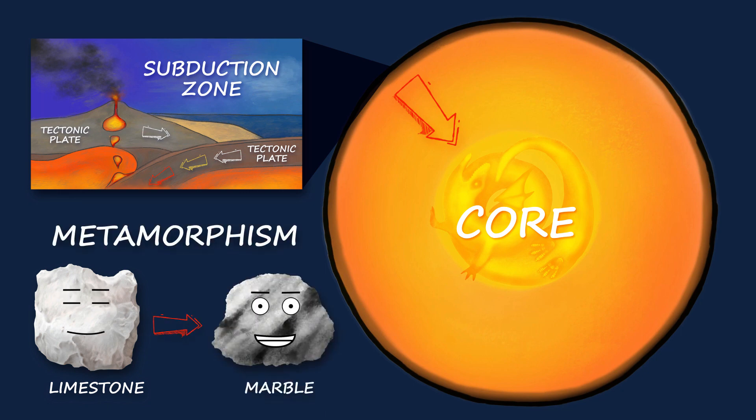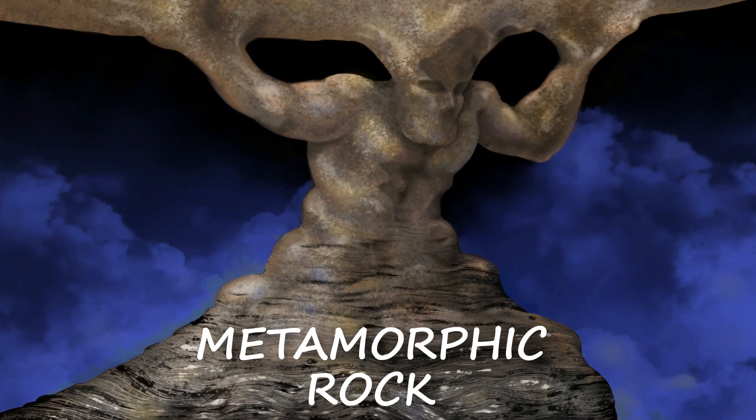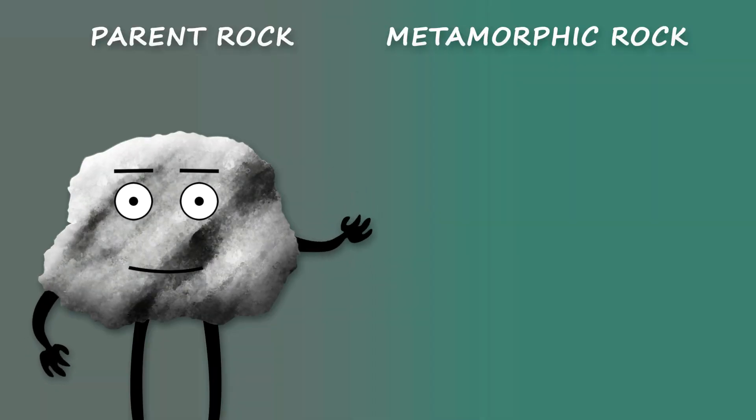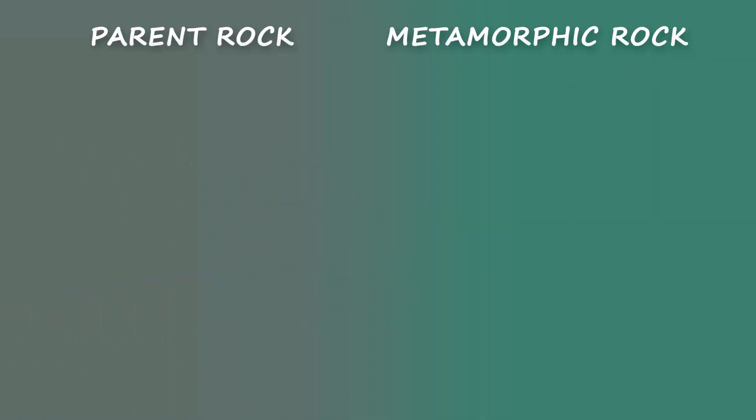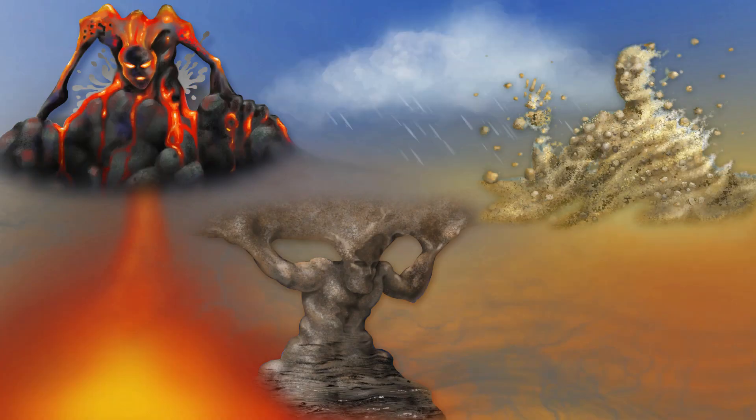Metamorphic rocks are formed thanks to temperature and pressure changes inside the Earth. Different metamorphic rocks form from different parent rocks. For example, sandstone exposed to heat and pressure can become quartzite, but if my friend basalt were exposed to heat and pressure, she could turn into greenstone.